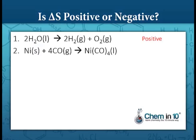Here we have one mole of nickel solid reacting with four moles of carbon monoxide gas to form one mole of nickel tetracarbonyl. We're going from one solid molecule and four gaseous molecules — five particles total — down to one particle. So I would say entropy is decreasing, delta S is negative.